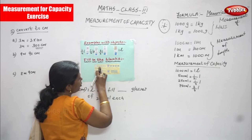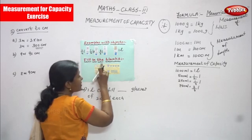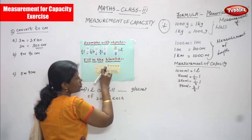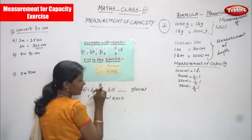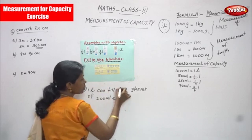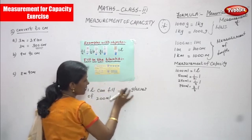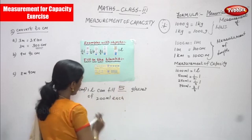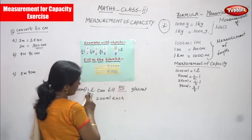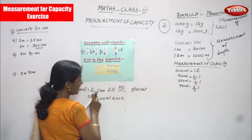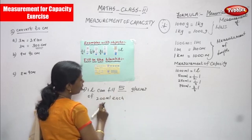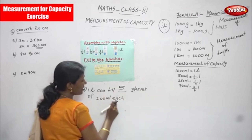So 200 plus 200 is 400, 400 plus 200 is 600, 600 plus 200 is 800, 800 plus 200 is nothing but thousand. So five glasses — that is 1000 ml, otherwise we can call it as one liter can fill five glasses of 200 ml each.